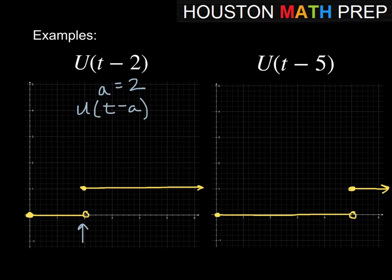Over here u of t minus 5, so a is just equal to 5 in this case, meaning that at t equal to 5, the switch is flipped and we go from the off value to the on value, from 0 to 1.